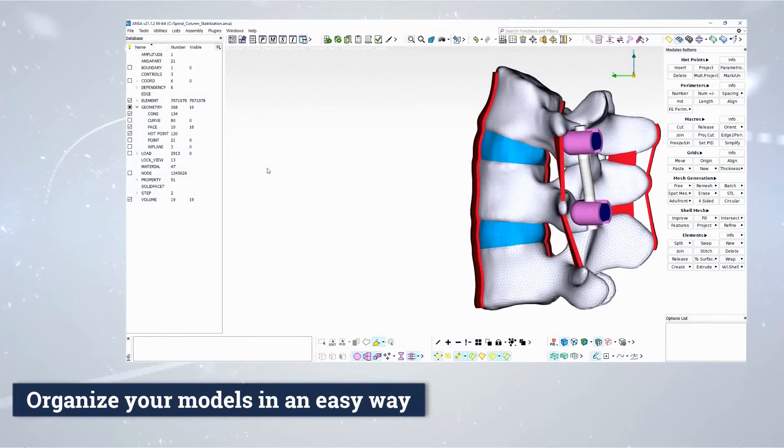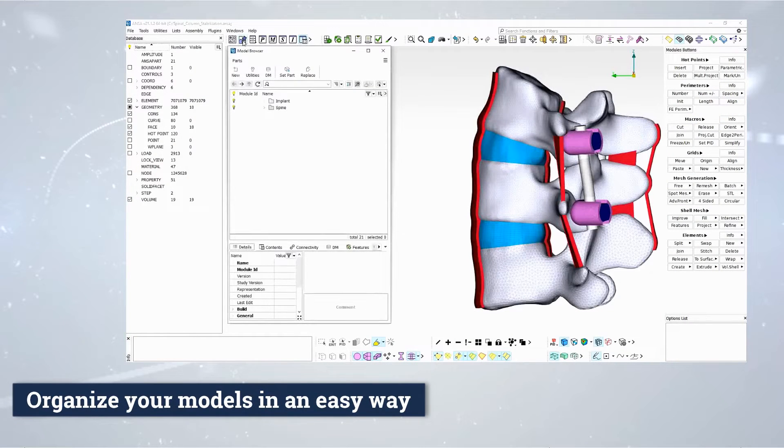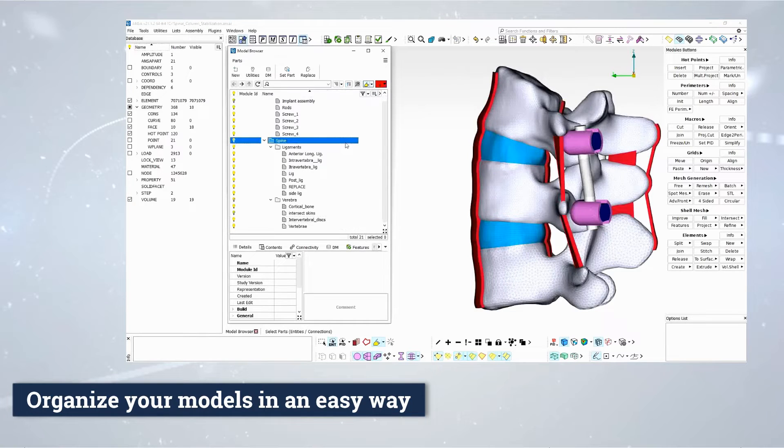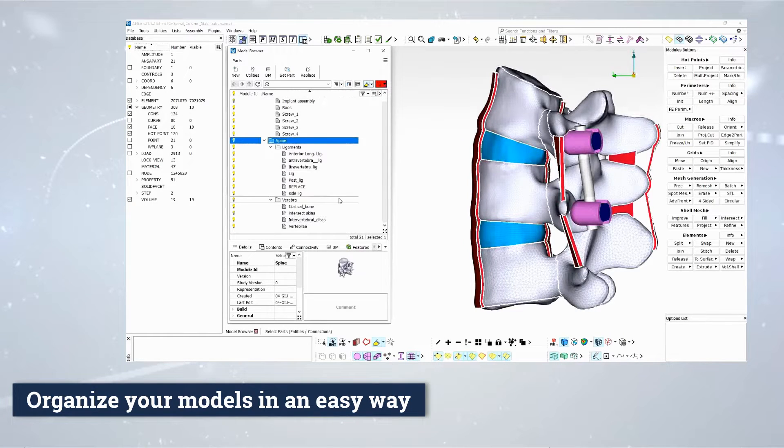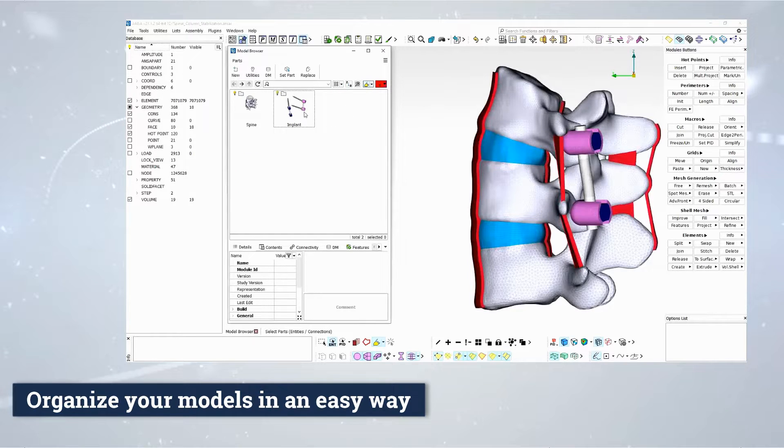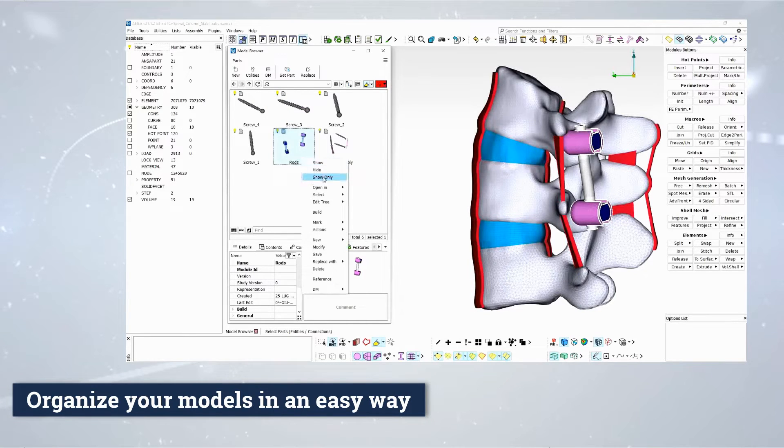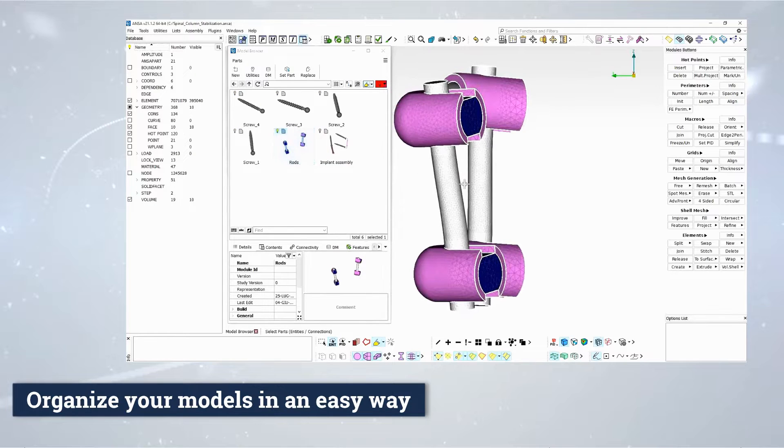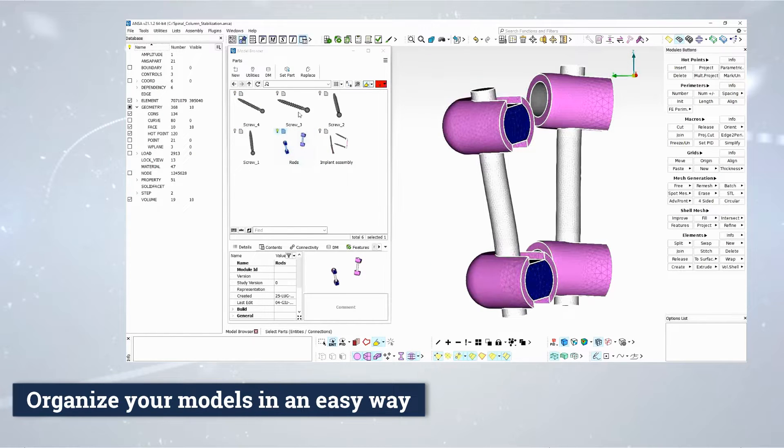With the ANSA pre-processor, the analyst can easily organize the whole model in different parts and groups, efficiently distinguishing anatomy from the device. Moreover, it is possible to quickly switch between different view modes so that the user can browse through the listed parts or take advantage of the available icons for easy isolation of the region of interest.